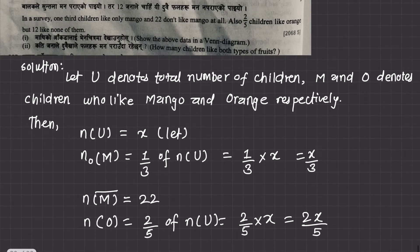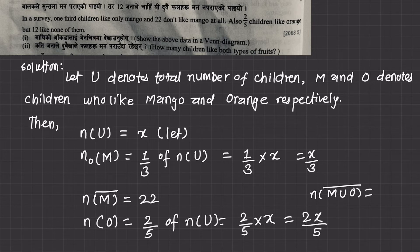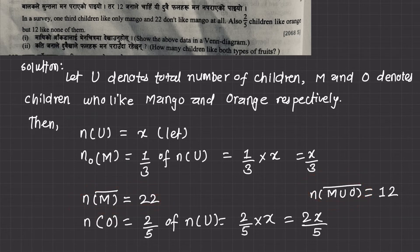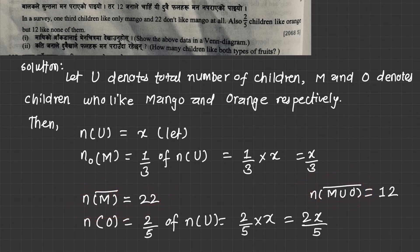The number who like none of them — the complement of mango union orange — equals 2. So M complement union O complement equals 2, meaning the complement of the union is 2.